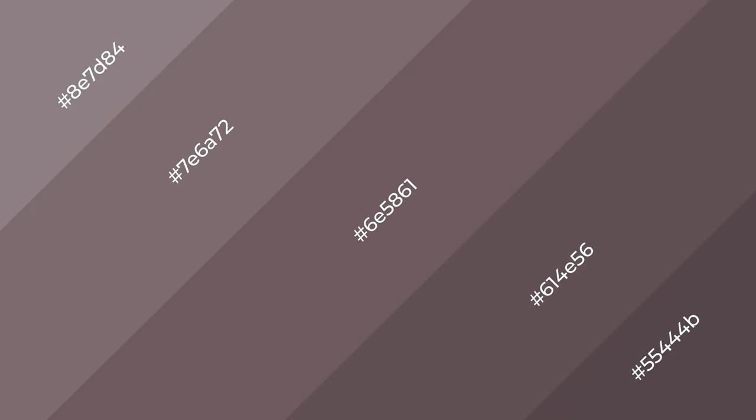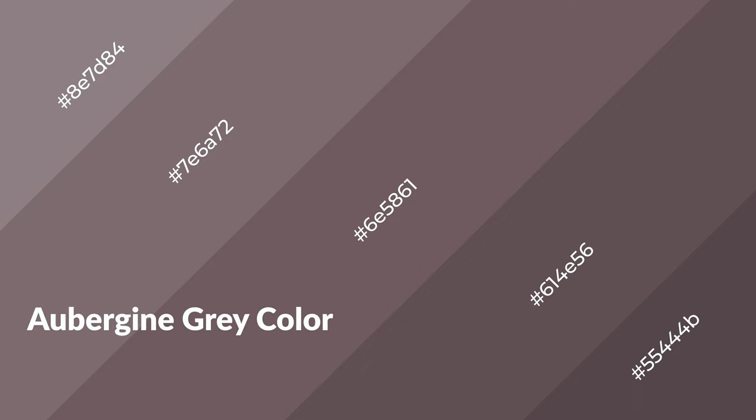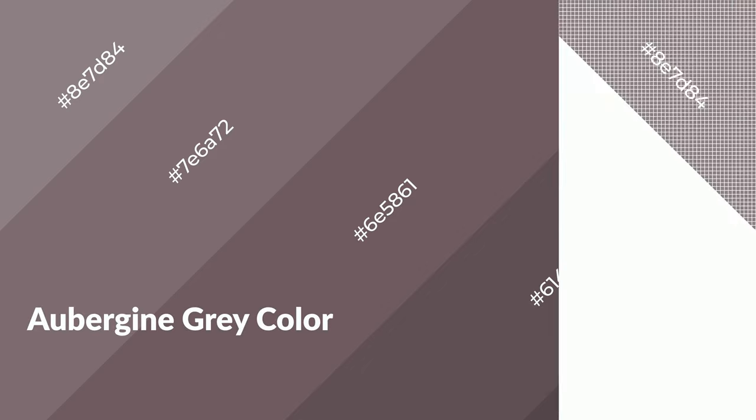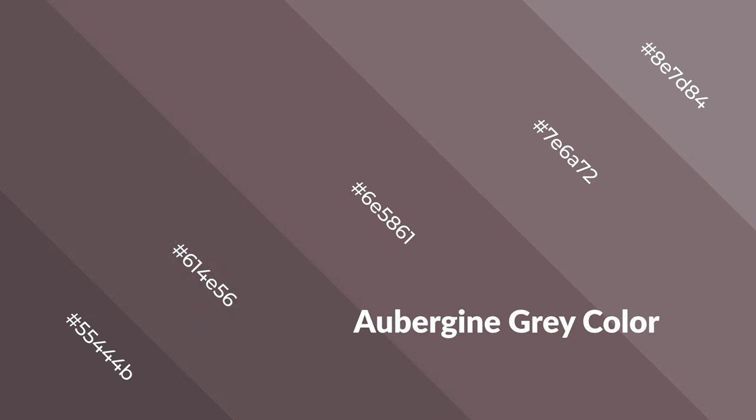Aubergine gray is a warm color that emits cozier and active emotions. Warm colors are symbols of warmth, fire, heat, and sunshine. They also evoke joy, passion, love, and even anger. You can see warm colors used in restaurants and gyms.